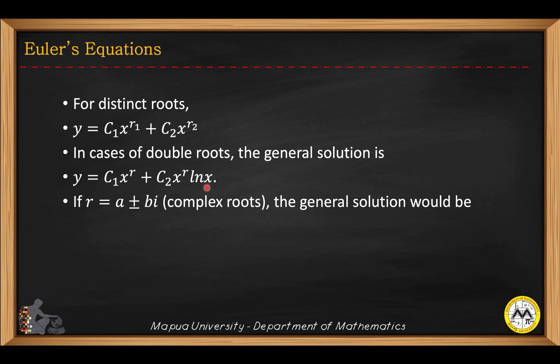For complex roots, you have a plus or minus bi, so the first root is the positive one, and then a minus bi is the second root. This is how you will write your solution when you have complex roots. The power of x here is the real part, and then for the imaginary part, for the cosine and sine function.